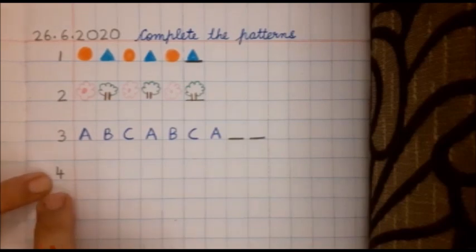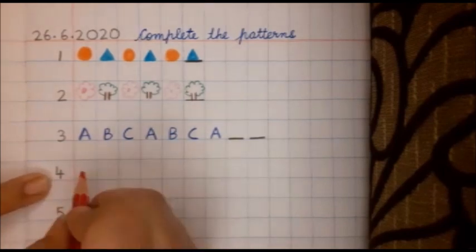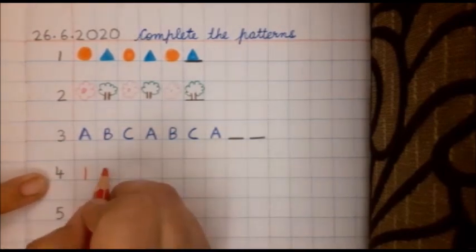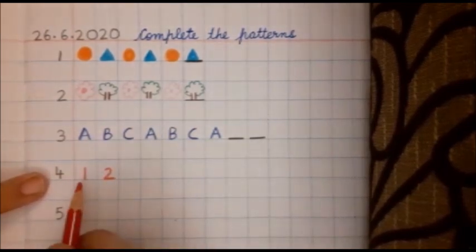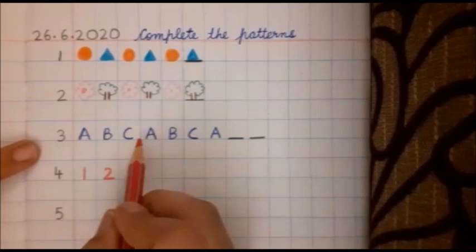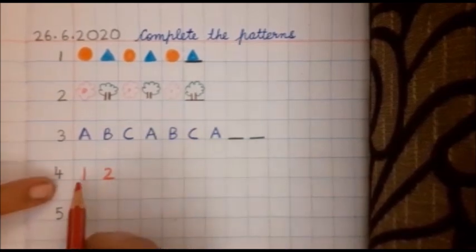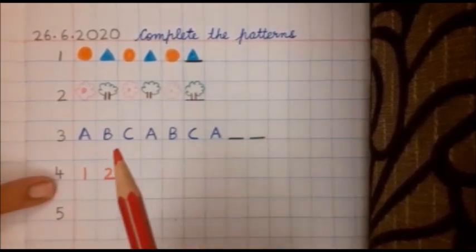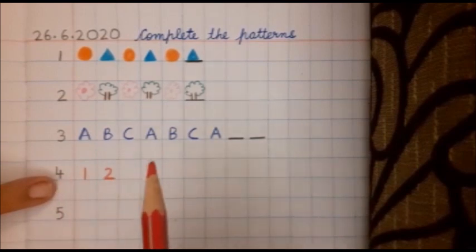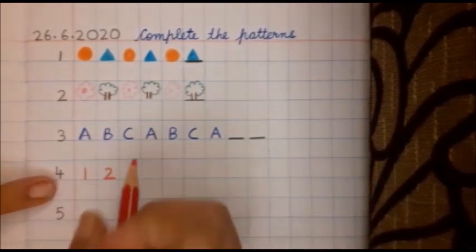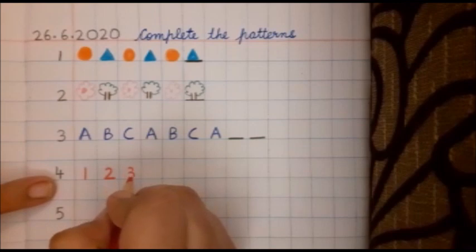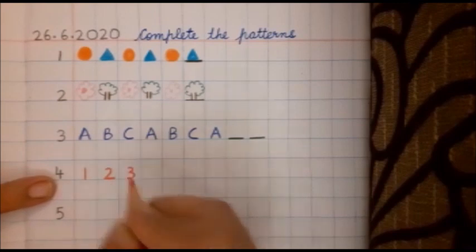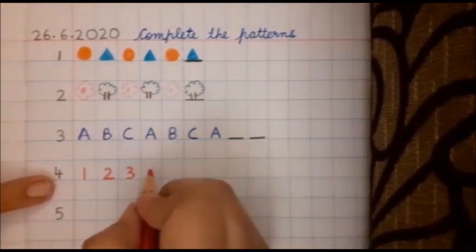For pattern number 4, Anubha ma'am is writing. See what Anubha ma'am is writing. What is this? What am I writing? Numbers. Here I have written alphabets, now I'm writing numbers. Okay, with a different color: 1, 2, 3. Okay, 1 again, 2, 3.